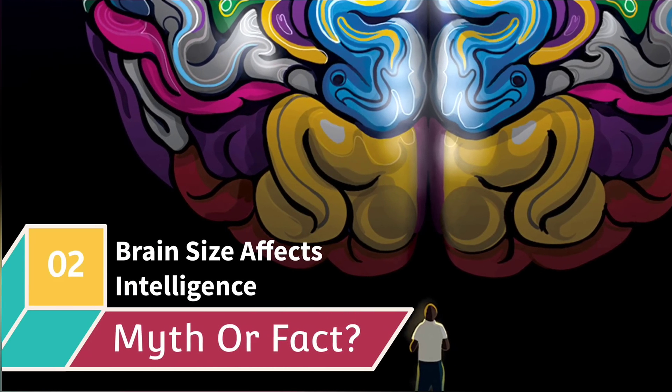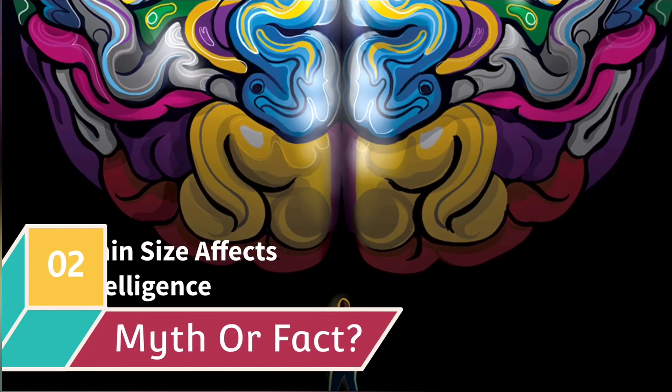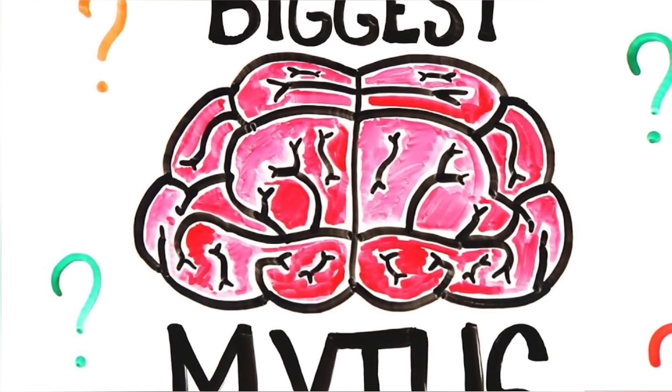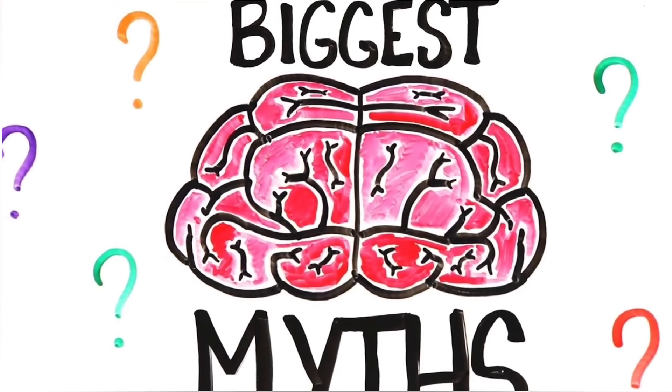Myth number two: brain size affects intelligence. The truth is intelligence is determined by the number of connections between brain cells called synapses, not by the size of the brain itself. Fun fact: an explosion of synapse formation occurs at about week 12 of a pregnancy during early brain development.